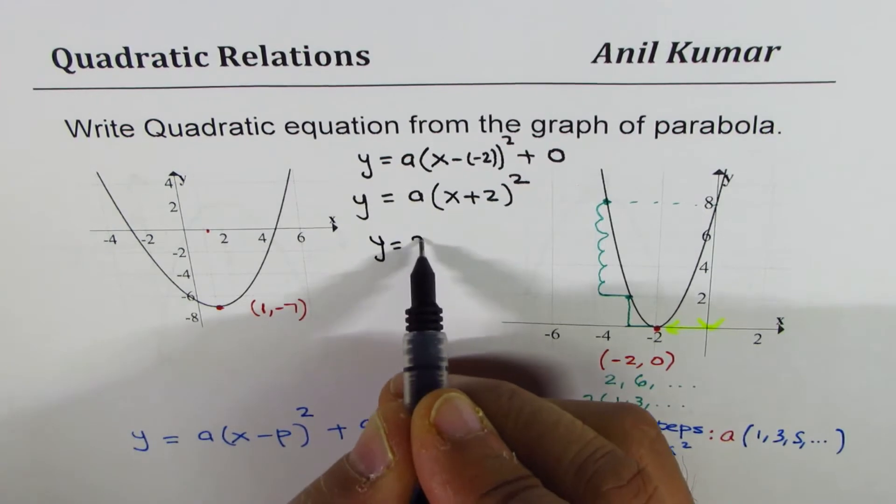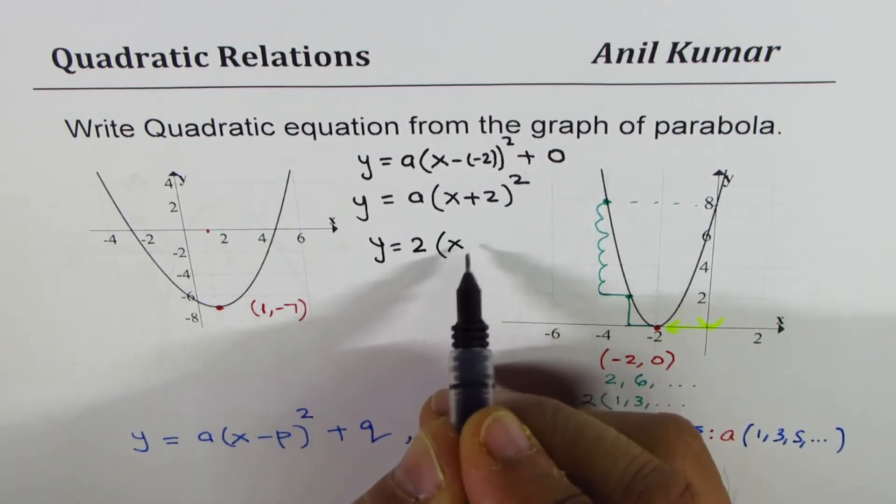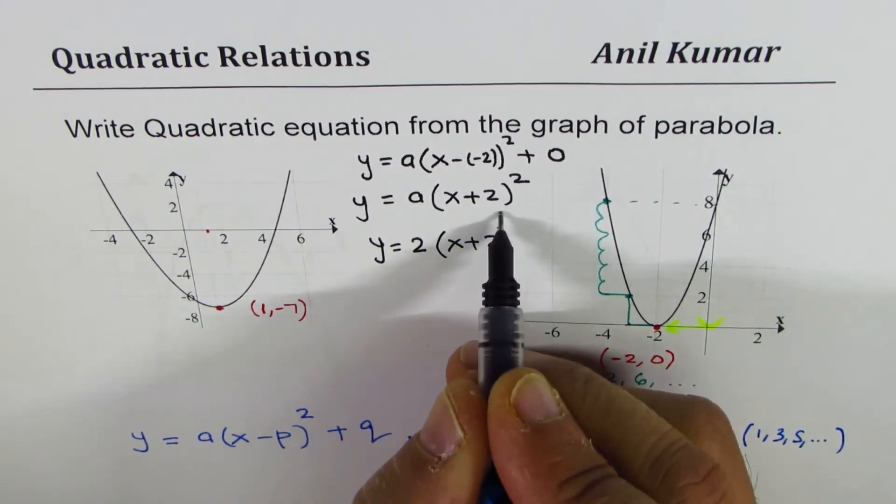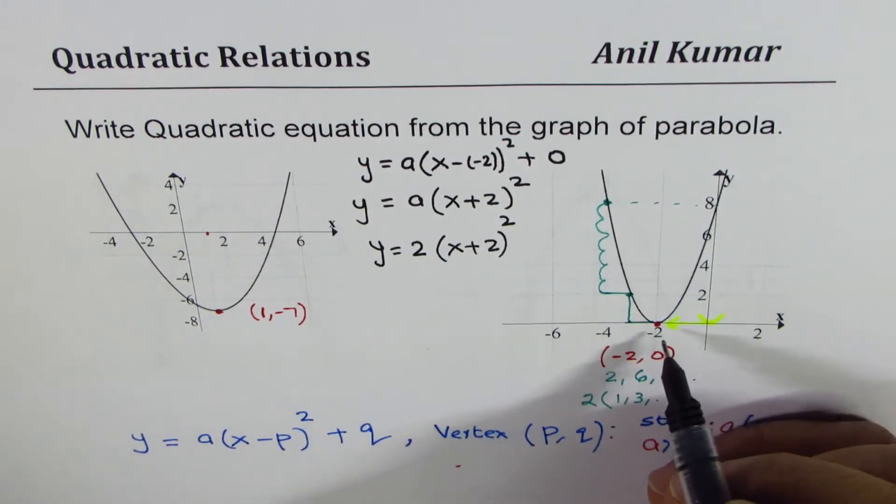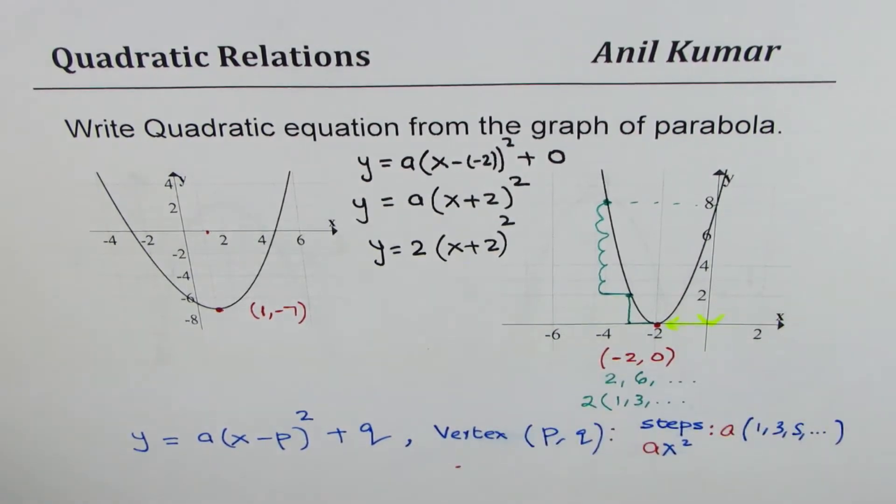Since the steps are twice one, three, five, seven, I can write this equation as y equals to two times x plus two whole square. So without any calculation we can actually get to the result.